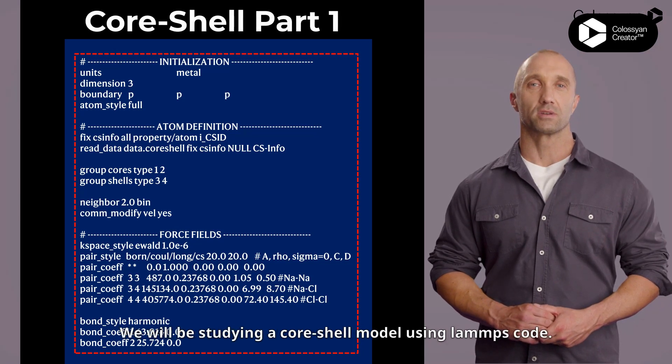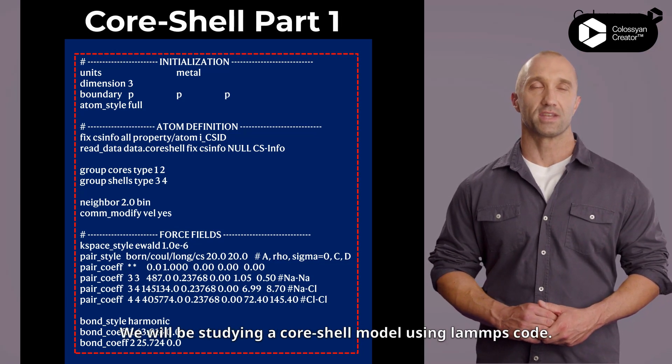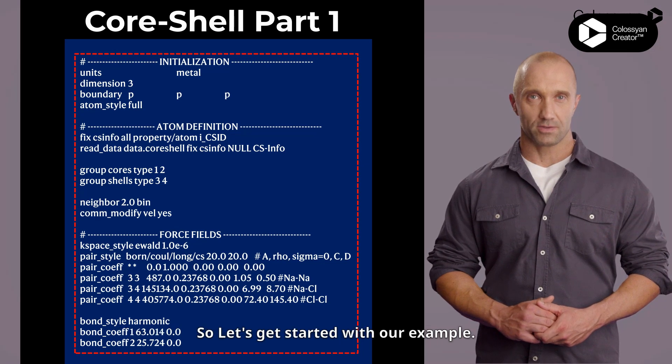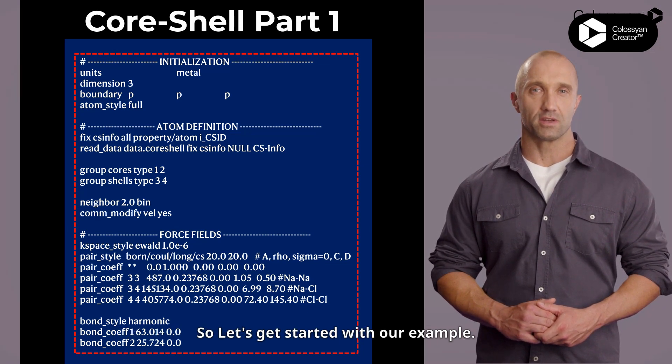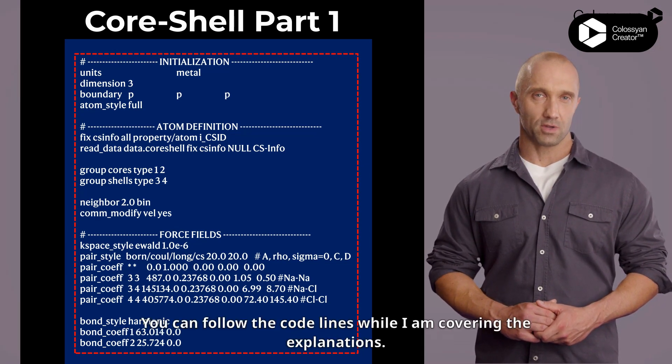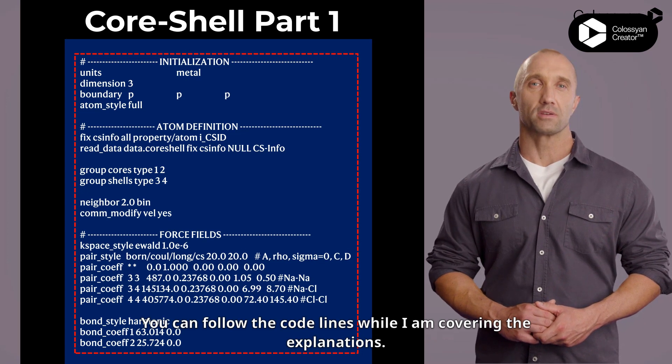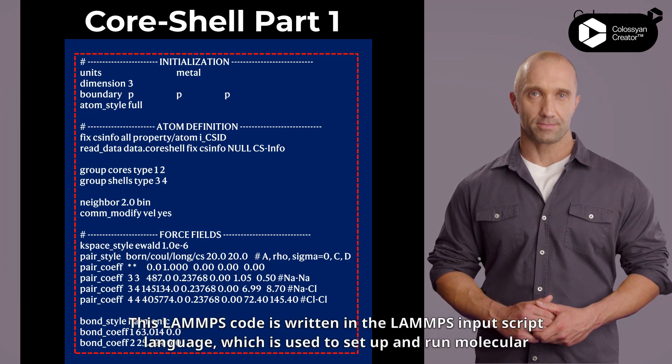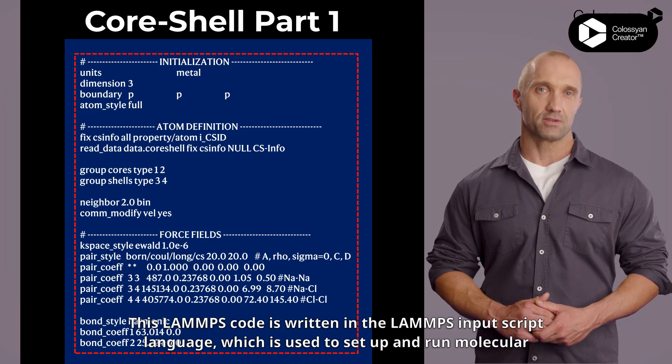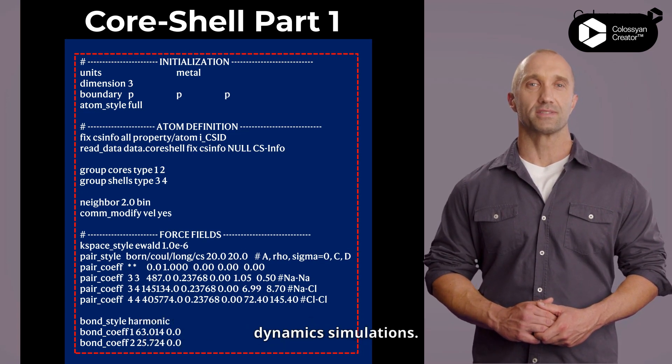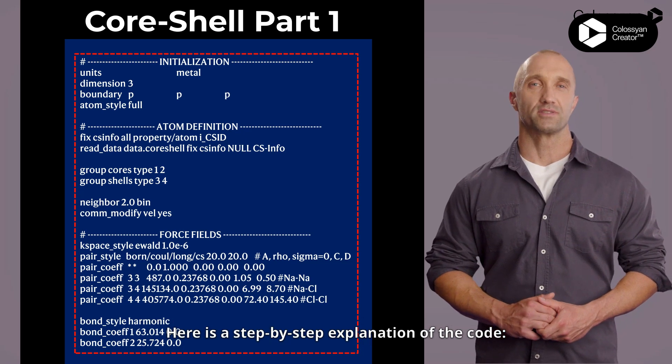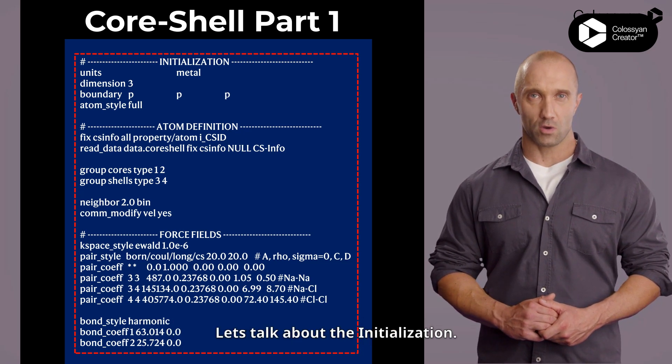Hello and welcome to this tutorial. We will be studying a Core-Shell model using LAMMPS code. Let's get started with our example. You can follow the code lines while I am covering the explanations. This LAMMPS code is written in the LAMMPS input script language, which is used to set up and run molecular dynamics simulations. Here is a step-by-step explanation of the code.